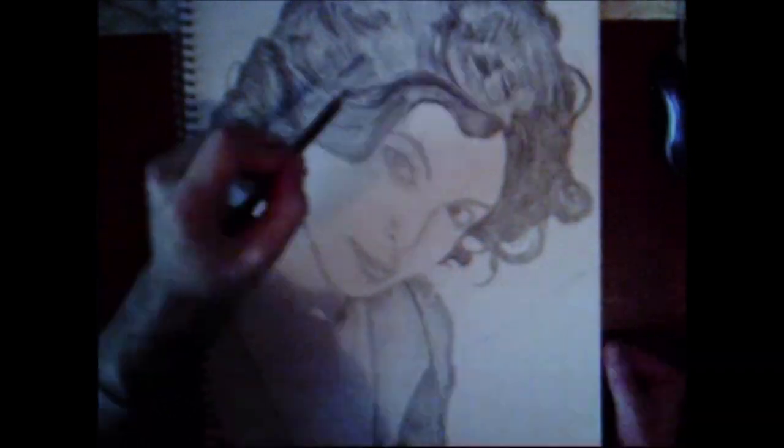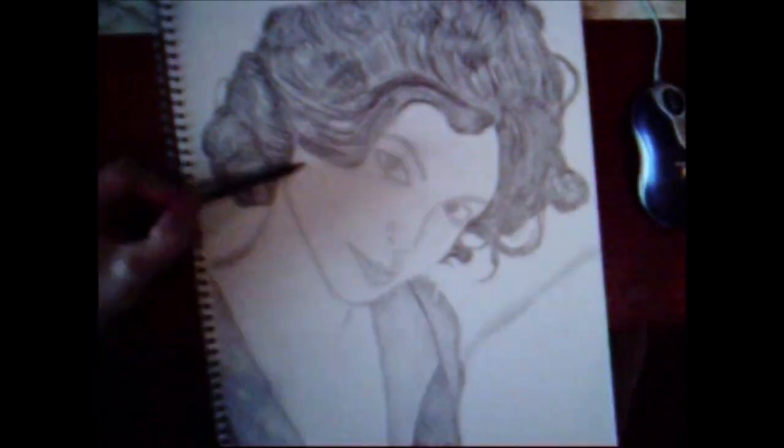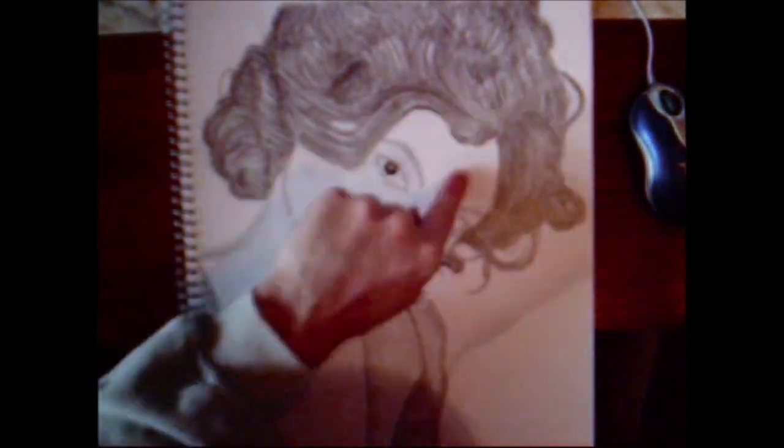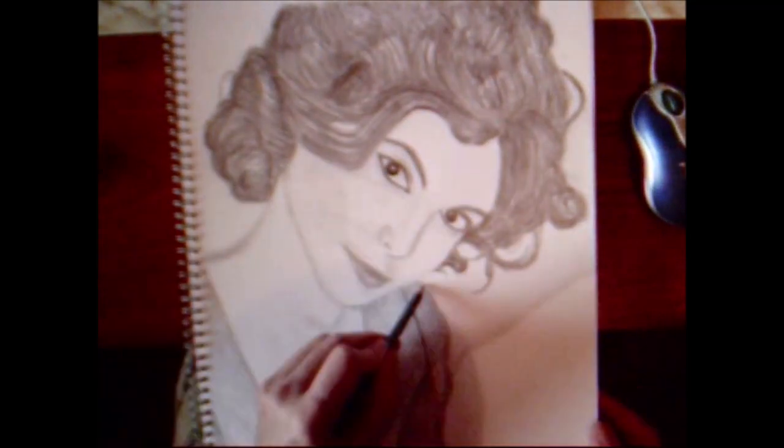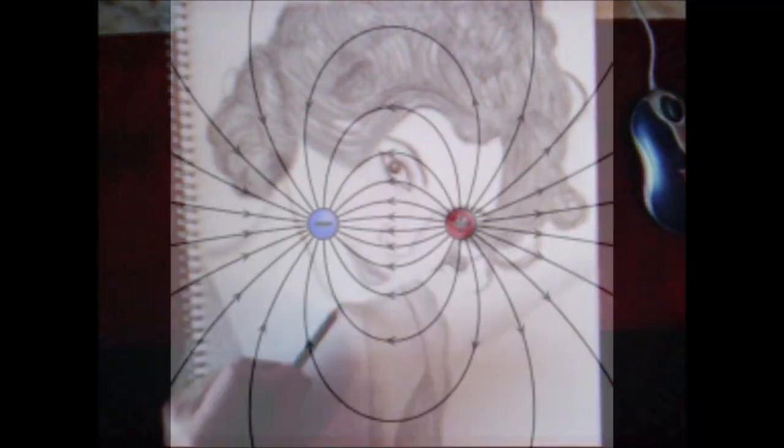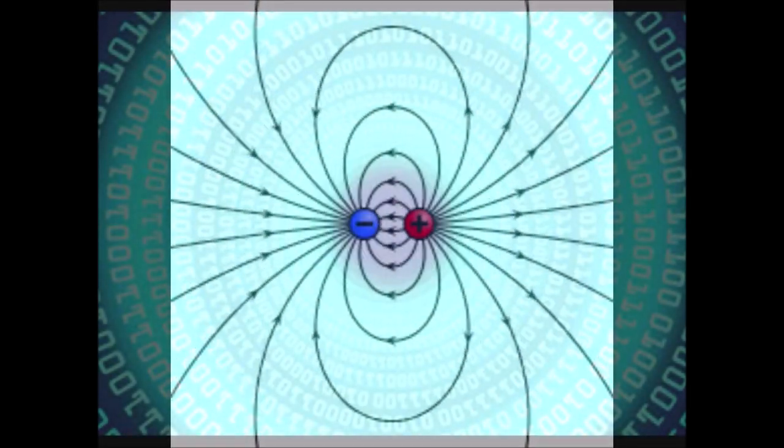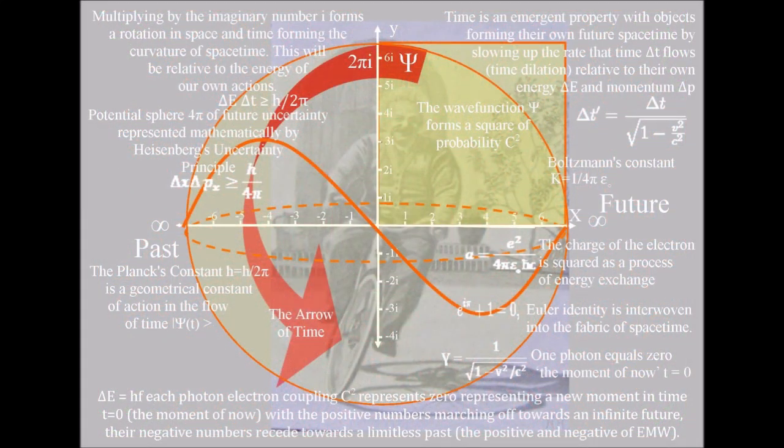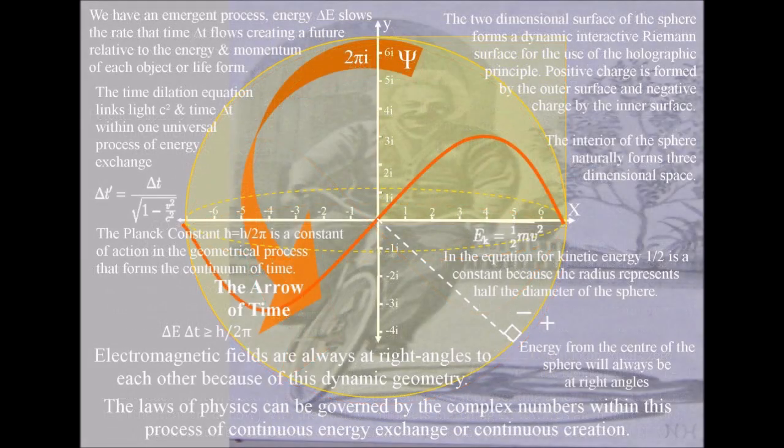The great advantage of this geometry is that an interior of a sphere is naturally three dimensional, and the two dimensional surface can form a geometrical boundary condition for positive and negative charge. The extra dimensions of string theory can be explained away as future possibilities and opportunities in our one three dimensional universe.